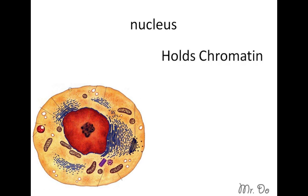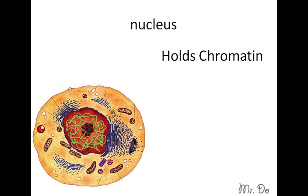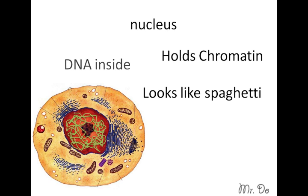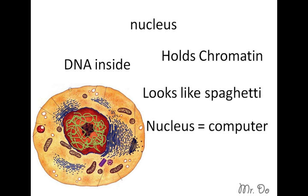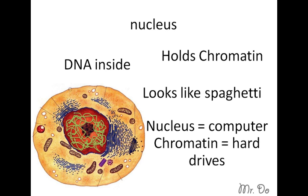The Nucleus holds information — we know that. What is the information inside the Nucleus? It's called chromatin. It's kind of squiggly, spaghetti-like, and it holds DNA inside of it. So if you were to think that the Nucleus is like a computer, then the chromatin are the hard drives, and the DNA is equivalent to the files inside the hard drive.